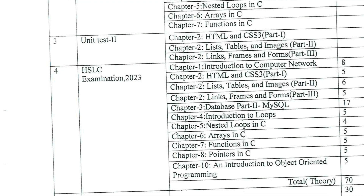For the HSLC examination, you will cover all chapters: Chapter 1, 2, 3, 4, 5, 6, 7, 8, and 10. Chapter 9, which is Structures, is not required. Pointers are required for the annual HSLC examination. The marks distribution is as follows: Introduction to Computer Network carries 5 marks.